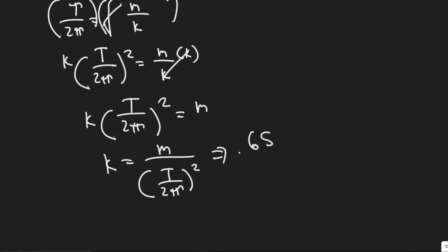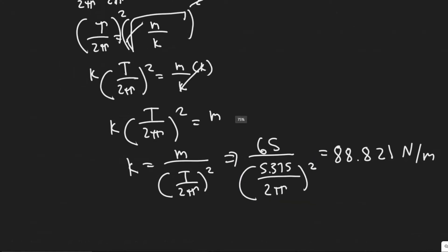Now let's go ahead and plug it in. The mass of our bungee jumper is 65 divided by the period, which is 5.375, dividing by 2π there, and squared. So let's go ahead and do that. So 5.375 divided by 2 times π, I'm going to square that value, and now I'm dividing 65 by that value. That'll give us a value of 88.821. The units of the spring constant are newtons per meter. So now we have the spring constant k.